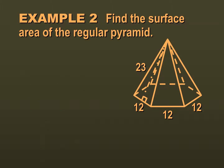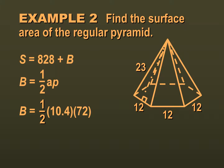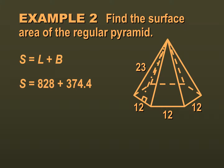Using our apothem, we can find the area of this hexagon. The area of the hexagon is one half the apothem times the perimeter: one half times 10.4 times 72, which is 374.4. Now we can find the total surface area: 828 was our lateral surface area, 374.4 was the area of our base, so adding them together we get 1202.4.